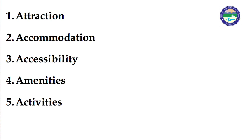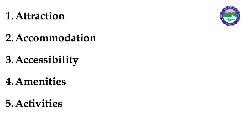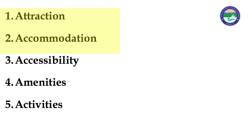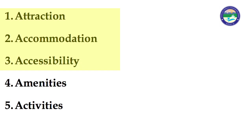Today we will discuss about the Five A's of Tourism. The Five A's of Tourism are Attraction, Accommodation, Accessibility, Amenities, and Activities. Attraction, Accommodation, and Accessibility we have already covered as components of Tourism. Here we will discuss about Amenities and Activities.